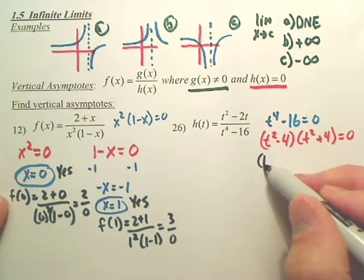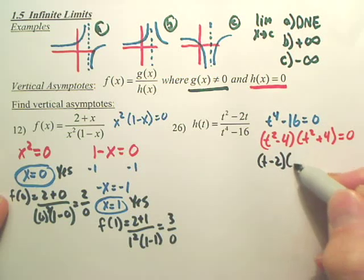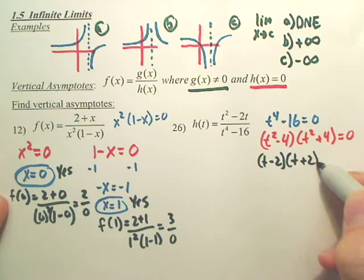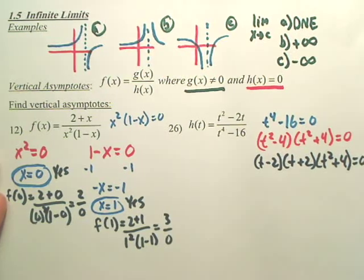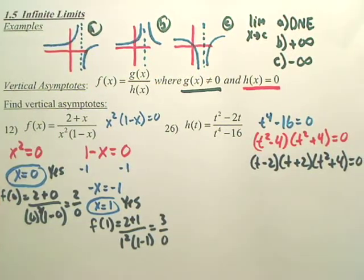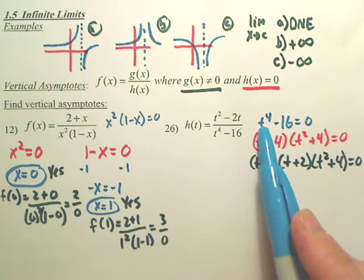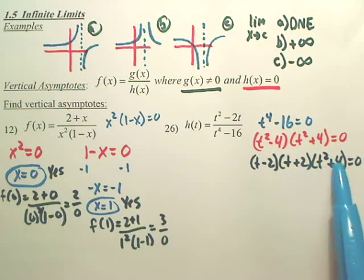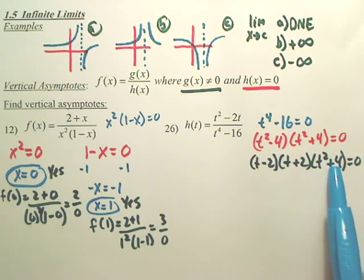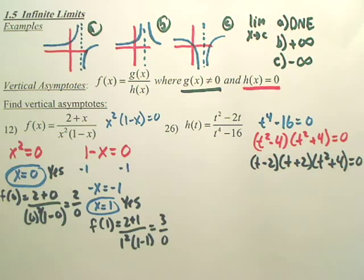Where this can still factor, t minus two, t plus two, and it's t squared plus four. Now, hopefully you can tell, I factored this, I got all these values. So, this, this, and this equals zero are possible vertical asymptotes.